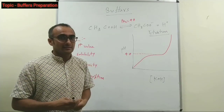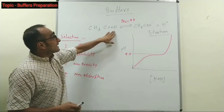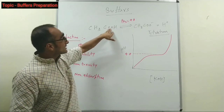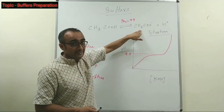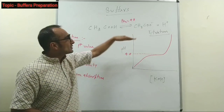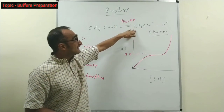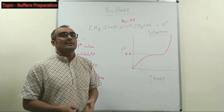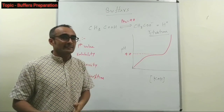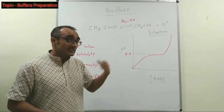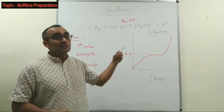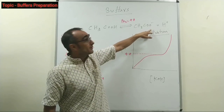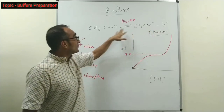At pH 4.8, if you keep acetic acid, the equilibrium between the protonated and deprotonated species is established. As a result, it is difficult to change the concentration of these species at equilibrium state. For example, if you add acid — changing pH is basically changing concentration of H⁺ ions. If you increase H⁺ ions in solution, pH goes down. So if you add H⁺ ions here, the excess H⁺ ions will associate with acetate ion to form acetic acid.